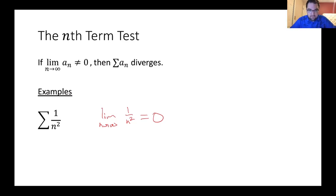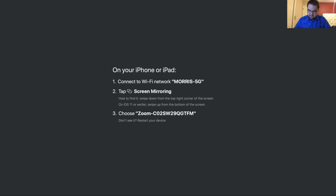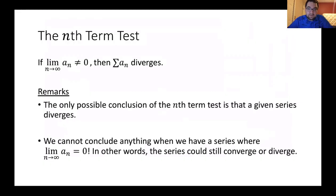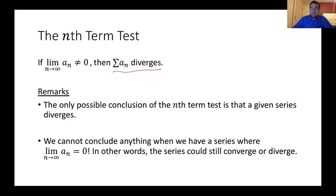So the limit of these terms is zero, but the nth term test doesn't tell us anything when the limit is in fact zero. There are a couple of remarks about this test. The only possible conclusion of the nth term test is that a given series diverges — you can never write 'converges by the nth term test.' Furthermore, we can't conclude anything when we have a series where the limit of the terms equals zero. In that case, the test just doesn't apply. This test is really nice when it works: if the limit is anything other than zero, it diverges. But if the limit is zero, this test doesn't tell you anything.